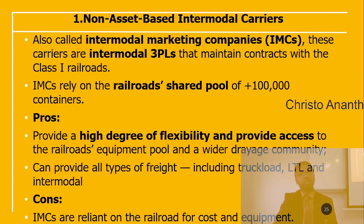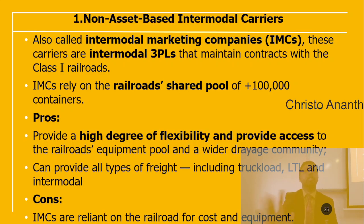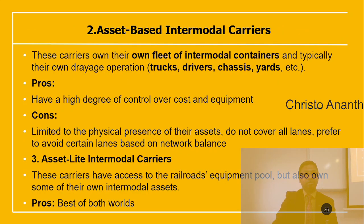Non-asset-based intermodal carriers, also called IMCs (intermodal marketing companies), are third-party logistics providers that maintain contracts with Class 1 railroads. IMCs rely on the railroad's shared pool of approximately 100,000 containers. Advantages include good flexibility, access to the railroad equipment pool, access to a wide rate community, and handling of all freight types including truckload, less-than-truckload, and intermodal. The disadvantage is that they are dependent on the railroad for cost and equipment.